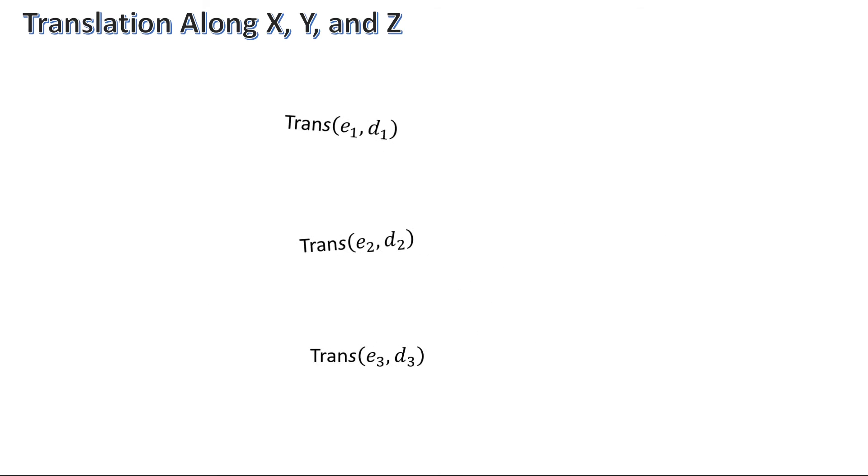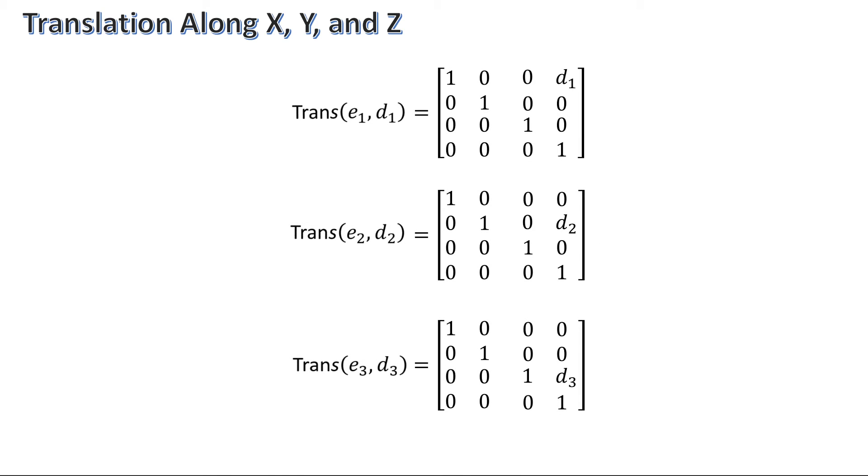The mathematics behind a pure translation looks like this. In a pure translation matrix, the only thing that occupies the rotation region is a 3x3 identity matrix, which is just diagonal ones throughout. In the translation region, you'll notice the distances denoted in their respective locations for translation in the x, y, and z.